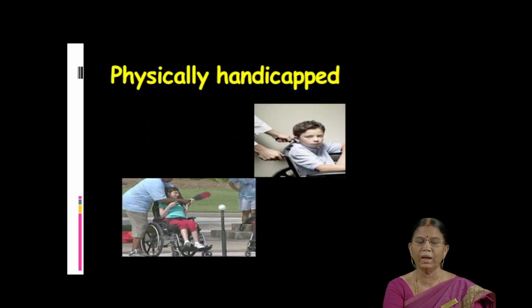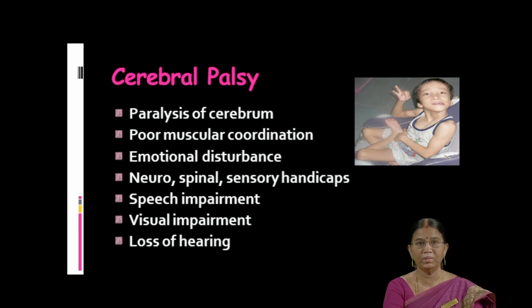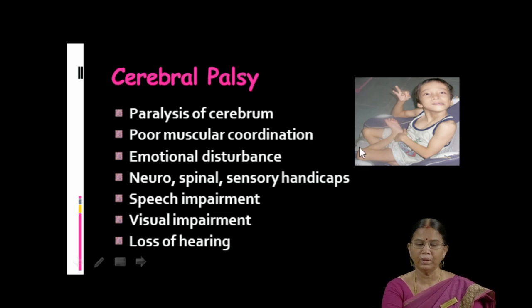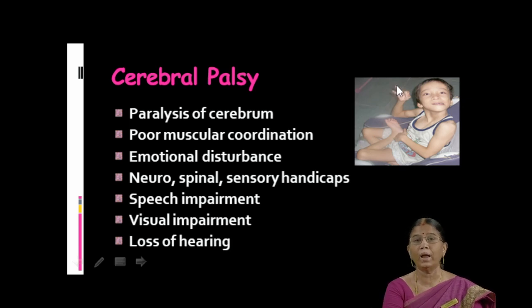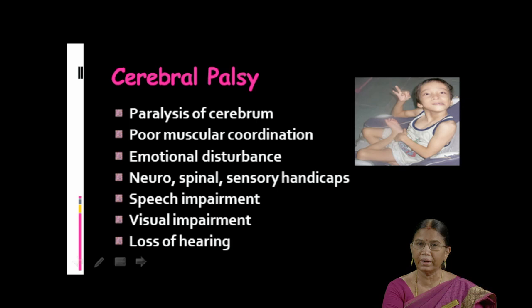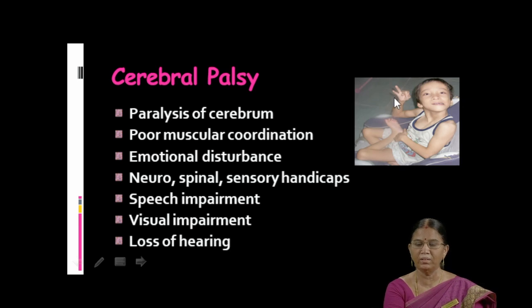Now let's look at physically handicapped children. When the limbs and nerves get affected, there are chances for physical handicap. There are different types of physically handicapped children. One among them is cerebral palsy. Here the cerebrum gets affected — paralysis of one or more portions of the cerebrum, that is in the brain. Because of that, the child may have poor muscular coordination. The child may not be in a position to pick up anything or do anything with their hands, and coordination between eyes and hands is also affected.